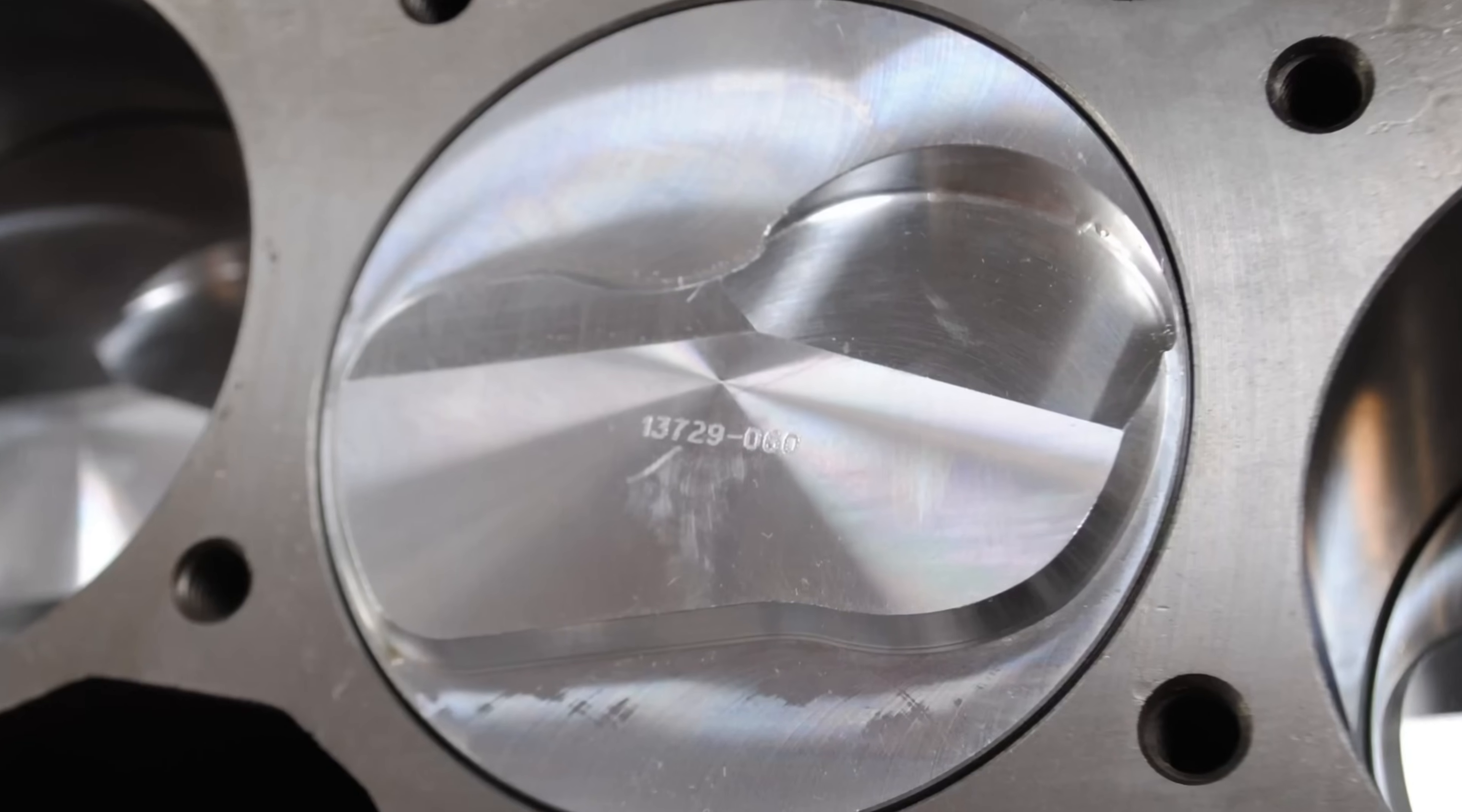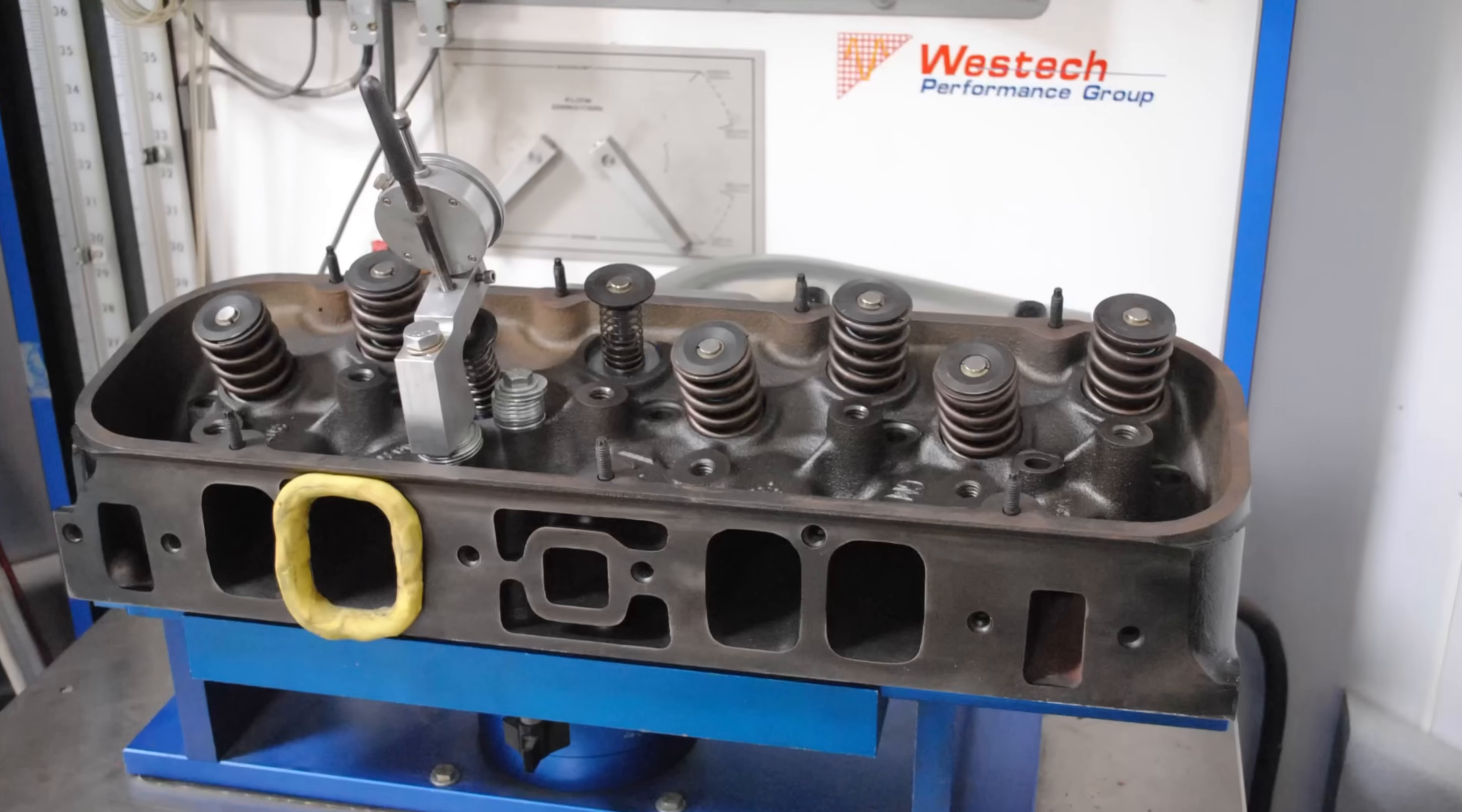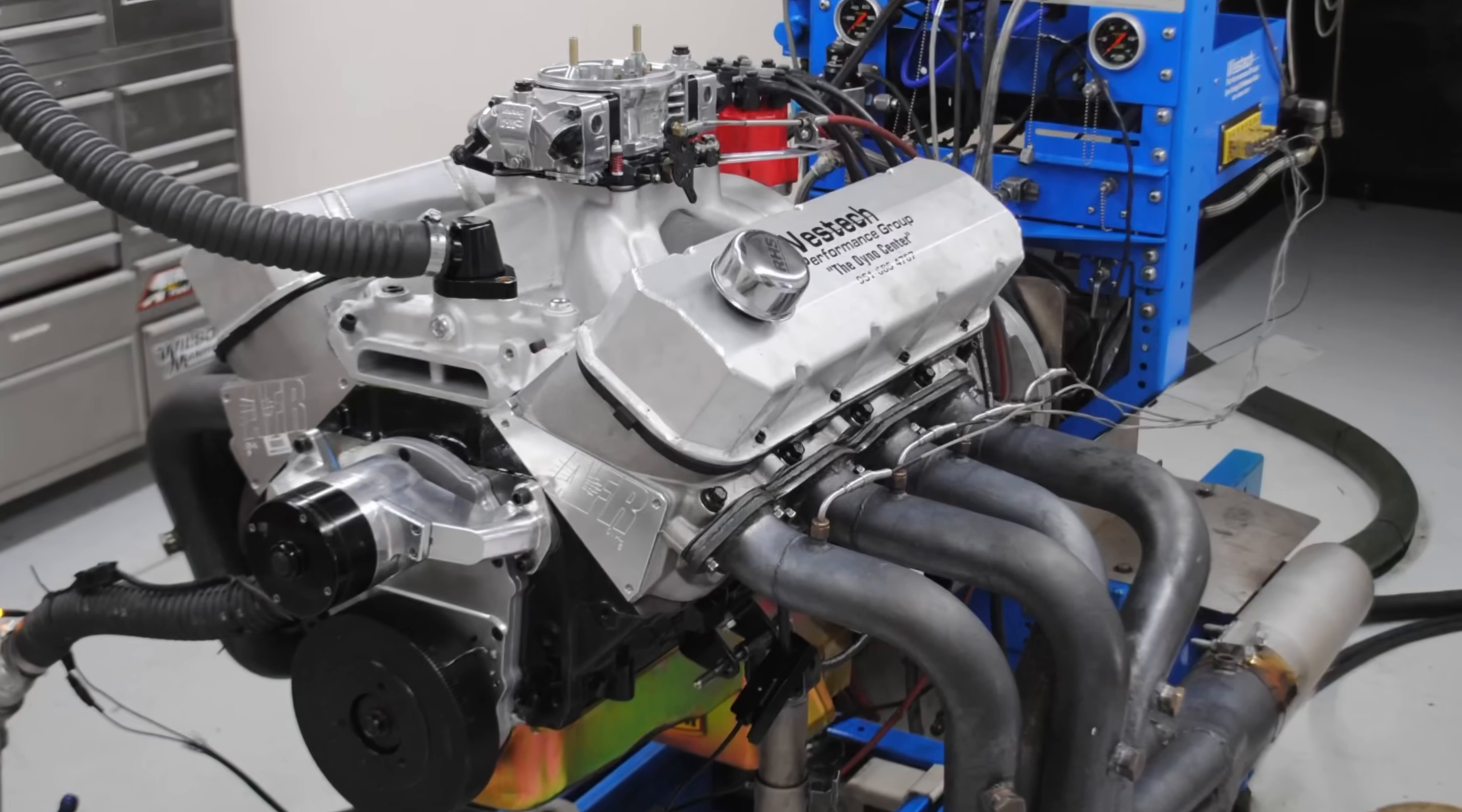What happens if you take the factory big block Chevy rec port heads and replace them with a set of aftermarket iron rec port heads, or replace those with a set of aftermarket aluminum oval port heads?